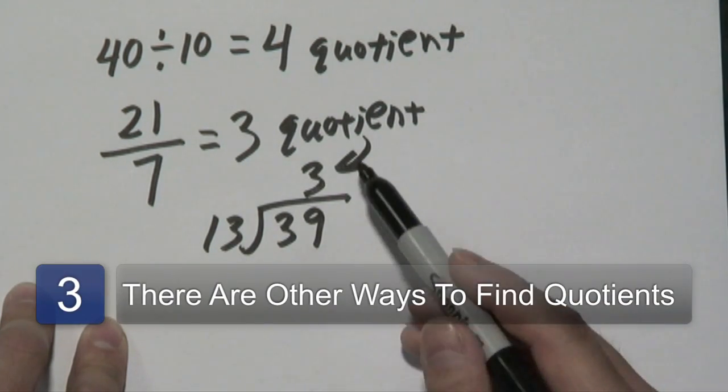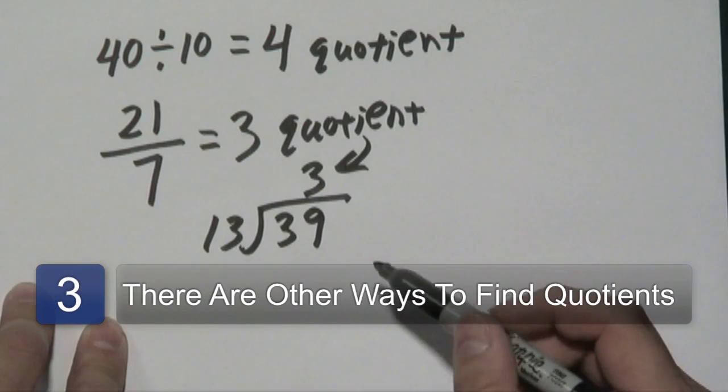Now there are many other ways you can find quotients, but these are three of the most common types. I'm Jimmy Chang and that is Quotient in Mathematics.